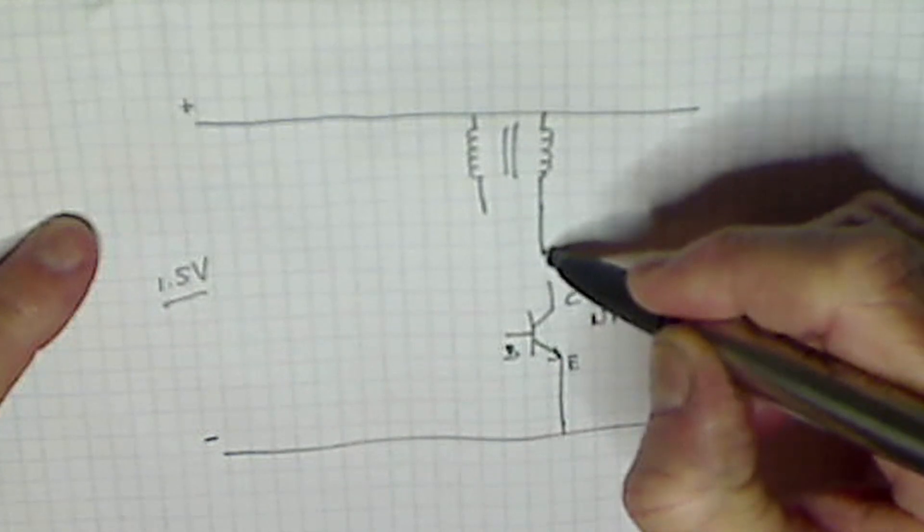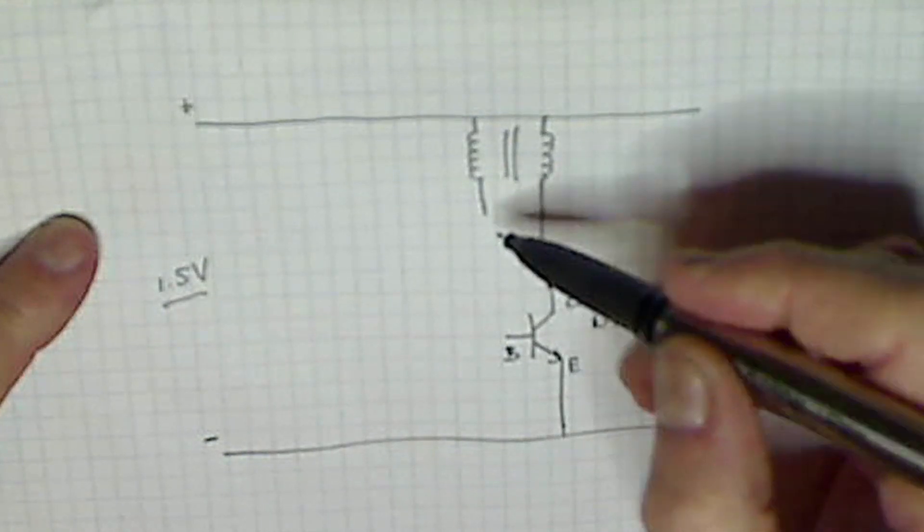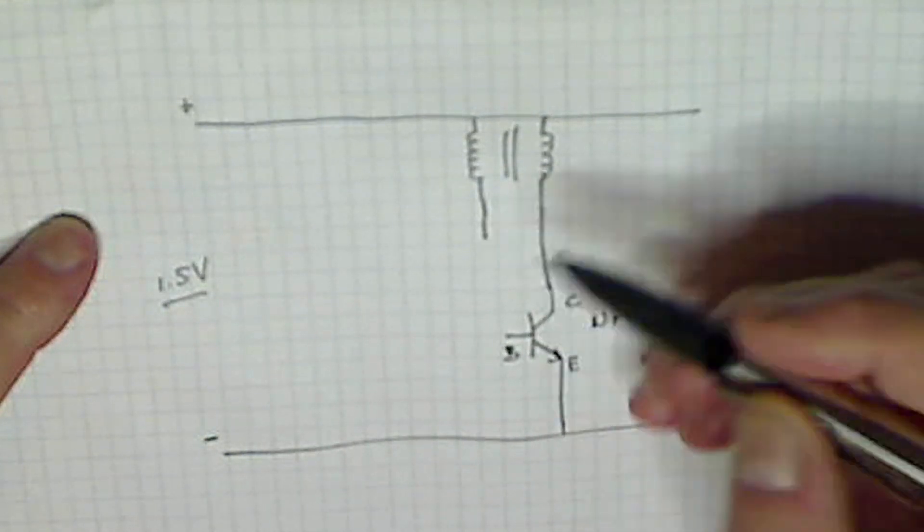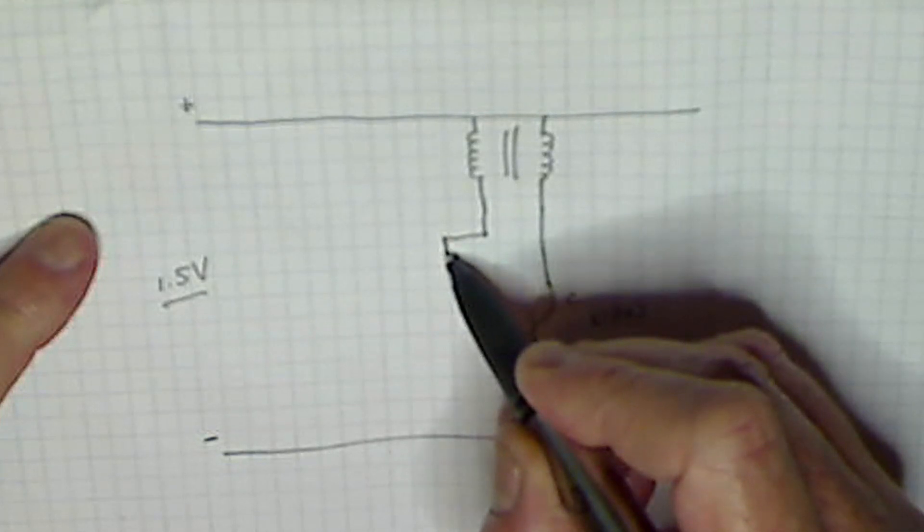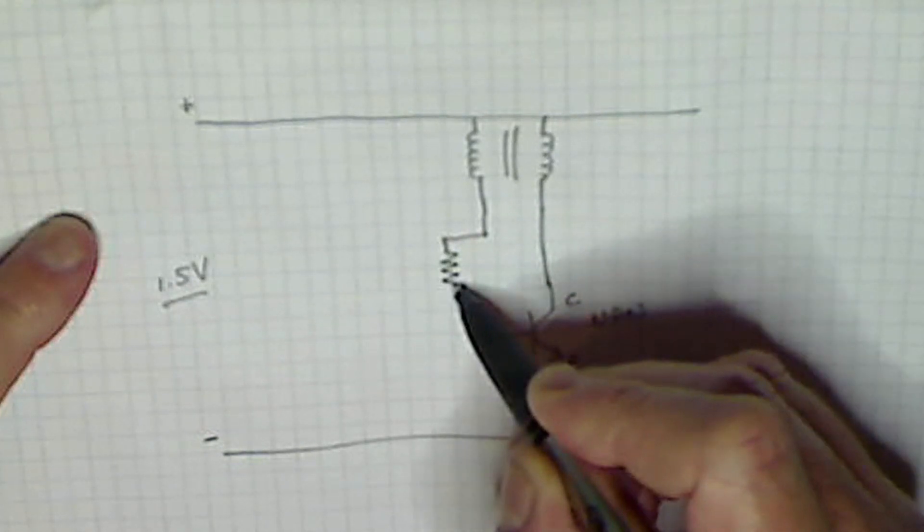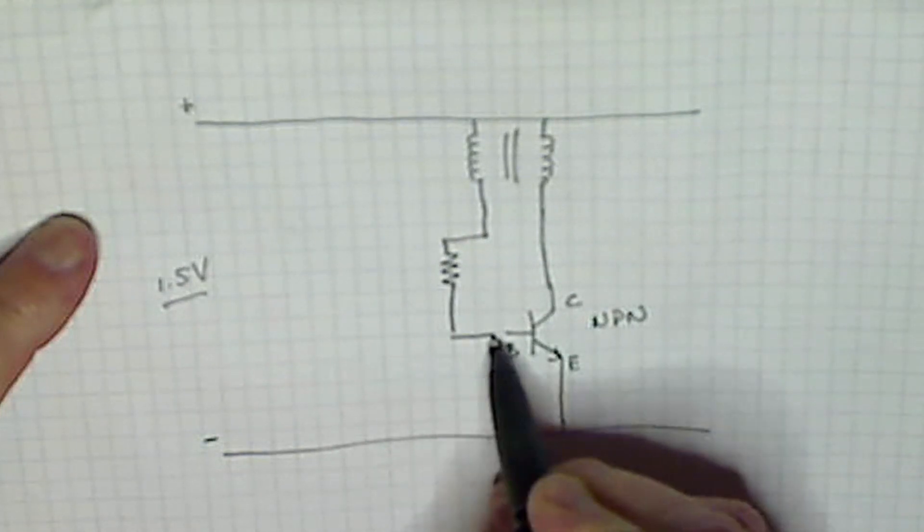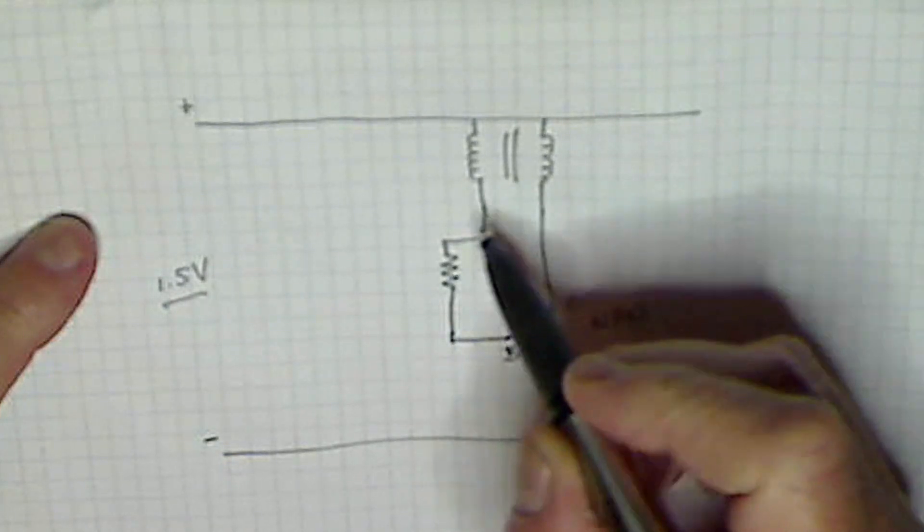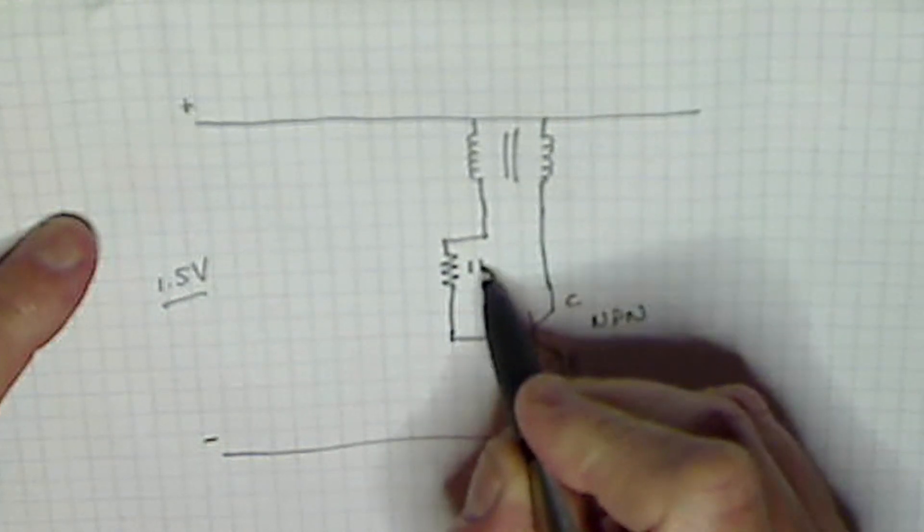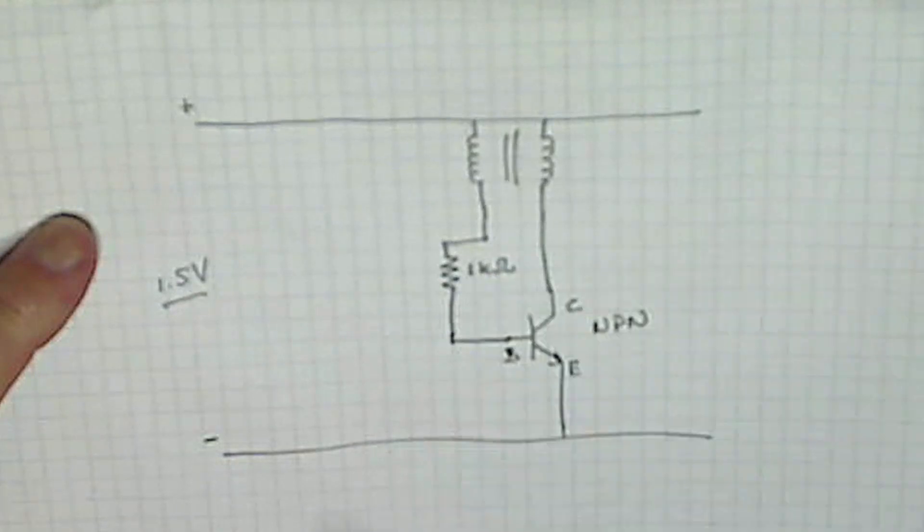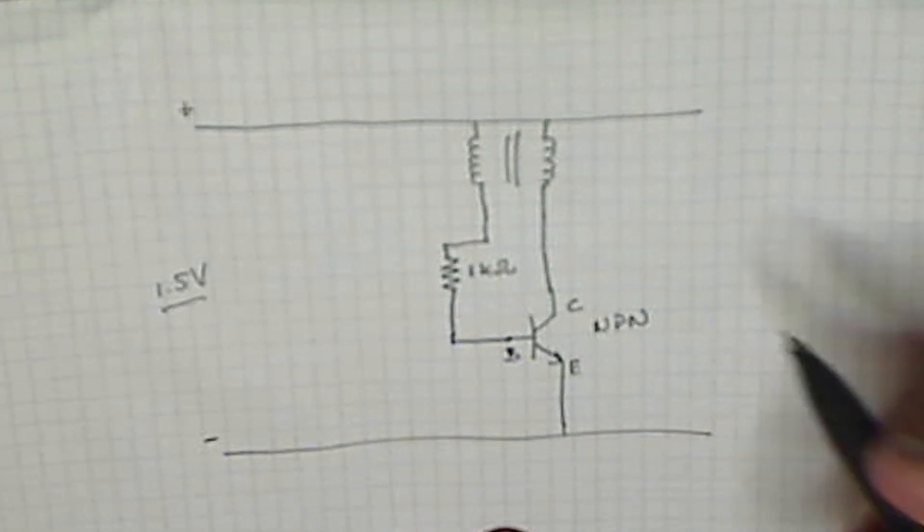All you do is you connect that lead to that, and off of this one, you come off with a resistor, and you connect it to that. And this is a 1kohm resistor.